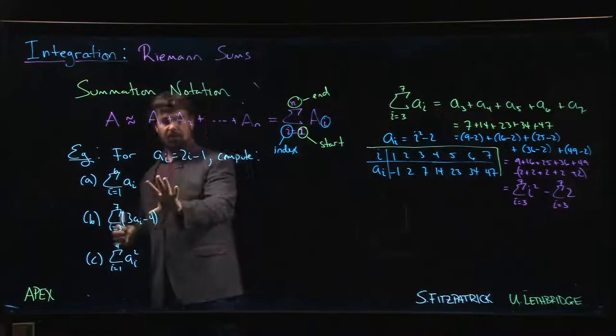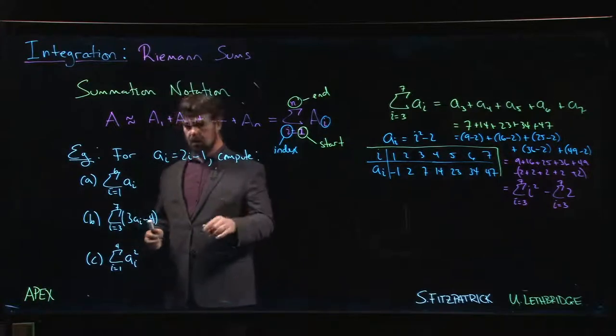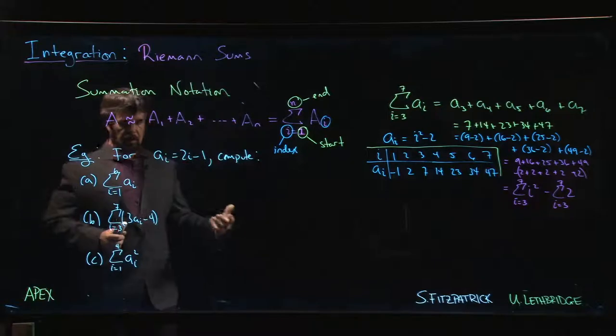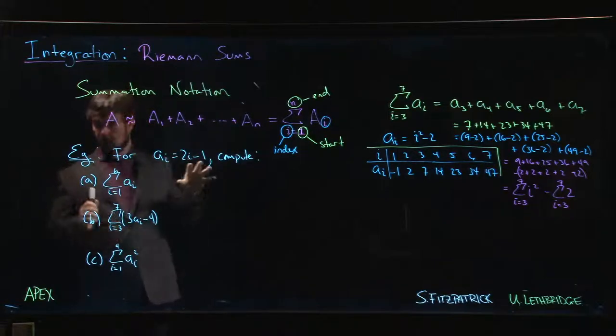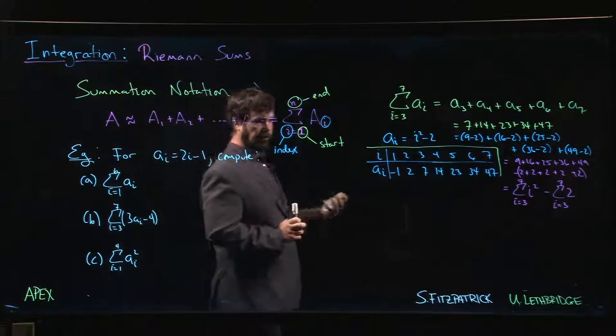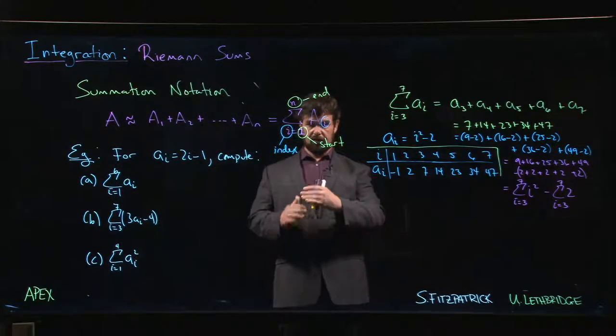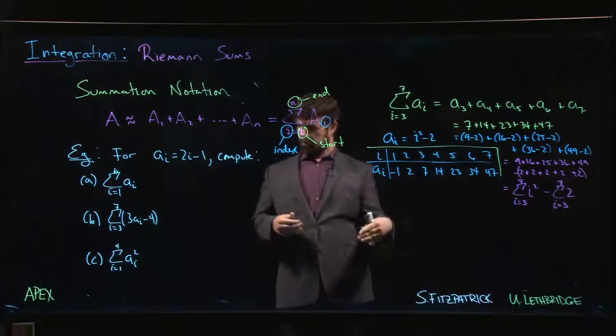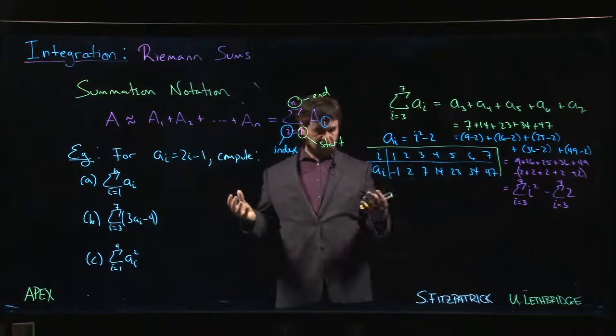All right, so let's work through an example here just to get practice with summation notation. This is one of these problems where we're using the index to define the entries in our list. The entries in our list are given as some function of the index, so rather than having to write down a whole list of numbers, we can tell you how to generate them.